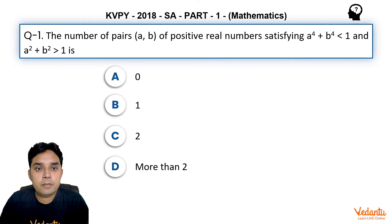This question says the number of pairs of positive real numbers satisfying a⁴+b⁴<1 and a²+b²>1 is: Option a is 0, b is 1, option c is 2, and d is more than 2.